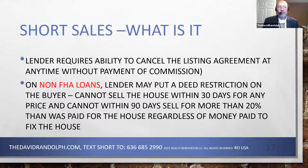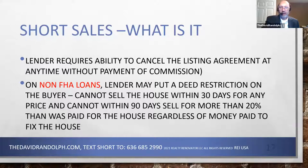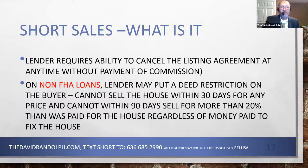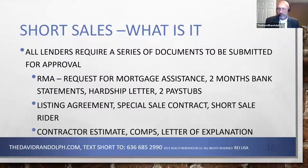Non-FHA loans: they cannot sell it for 90 days. There is an advanced technique to wholesale it the same day, but most people will have to hang on to it for 90 days. The lender requires a series of documents to be submitted for approval. There are a couple of main documents: the RMA form — Request for Mortgage Assistance — which comes from the bank, either off their website or emailed to you. It's like an application requiring two months of bank statements, a hardship letter, two pay stubs.